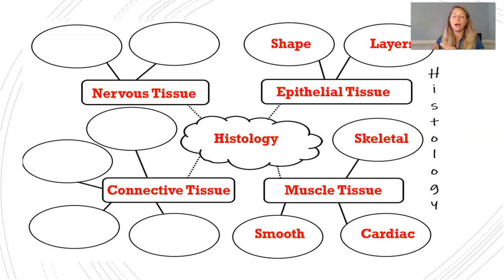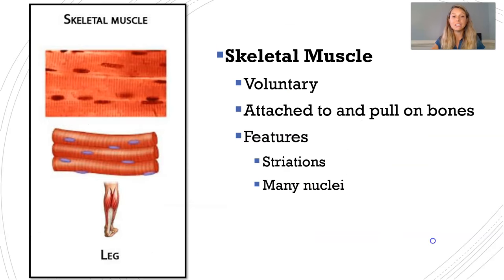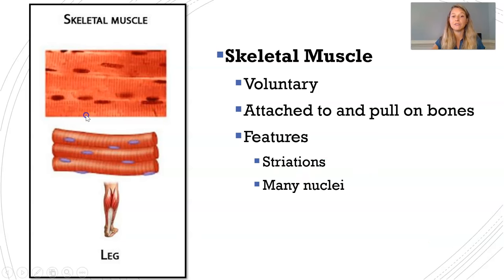Go ahead and add those to your concept map. Skeletal muscle is a voluntary tissue type, meaning you have to consciously stimulate it in order to get it to pull on bones or skin and create movement. The tissue is defined by striations — those little pinstripe patterns on the elongated muscle cells. Skeletal muscle cells are multi-nucleate, meaning each cell can have many nuclei. This is what you typically think of when you picture a muscle.